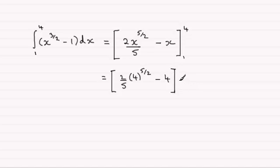And then from this we subtract what we get when we put 1 through. So you're going to have 2 fifths times 1 to the power 5 over 2 minus the 1. OK, so working this out,